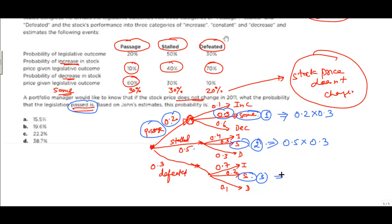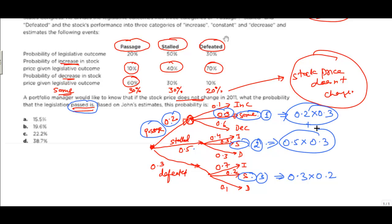The probability of node 3 is the joint probability of legislation being defeated and stock price remaining the same. The total probability of the stock price not changing is the sum of node 1, node 2, and node 3.